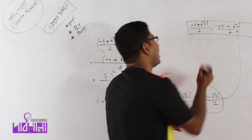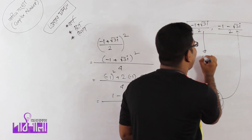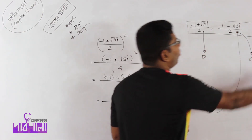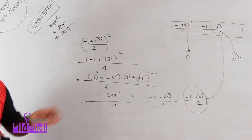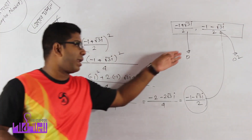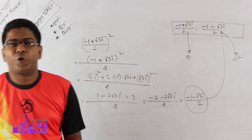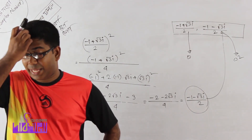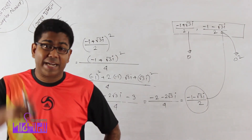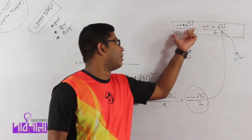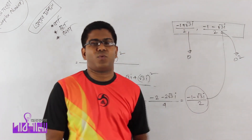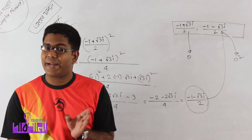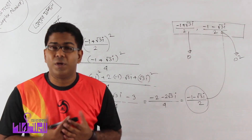The second root of unity is omega. The value of omega squared can be derived from omega. The value of omega is minus 1 plus root 3i divided by 2. Omega squared is minus 1 minus root 3i divided by 2.